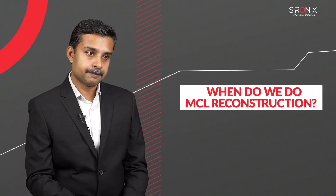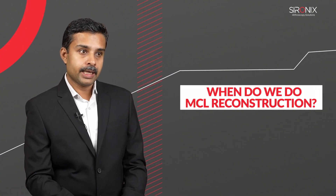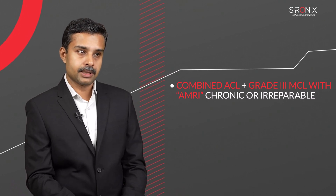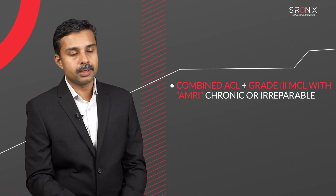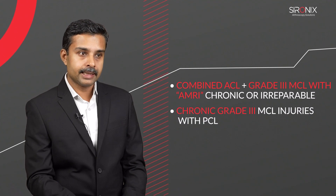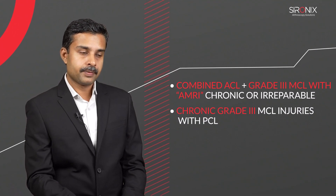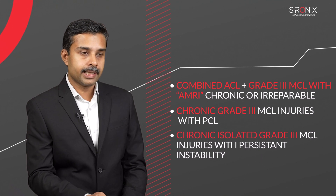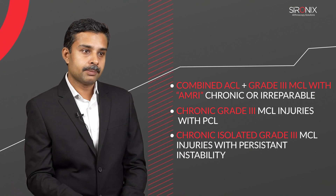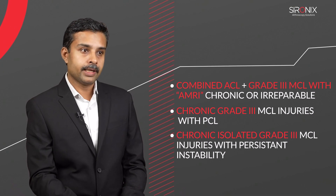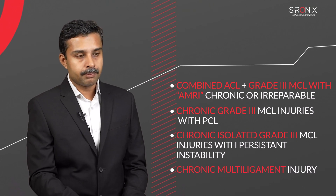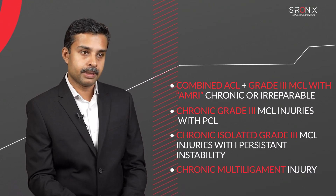When do we do an MCL reconstruction? The first scenario is a combined ACL plus a grade 3 MCL injury with an anteromedial rotatory instability, when the MCL injury is chronic or irreparable. The second is a chronic grade 3 MCL injury with a PCL injury. The third is a chronic isolated grade 3 MCL injury — those treated conservatively that come back with persistent instability. And the fourth scenario is a chronic multi-ligament injury scenario.